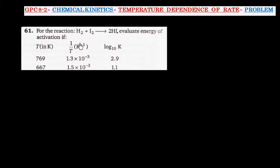For this reaction, H2 plus I2 gives 2HI, we have been given rate constant values at two different temperatures. And then we have to calculate activation energy. So we have to calculate in this case activation energy, which is shown by Ea.